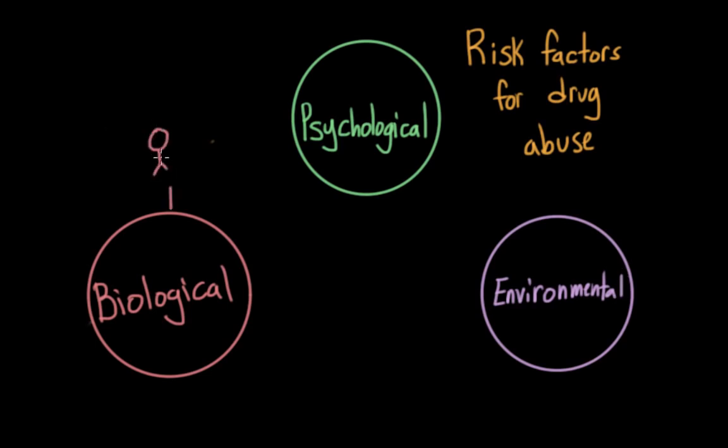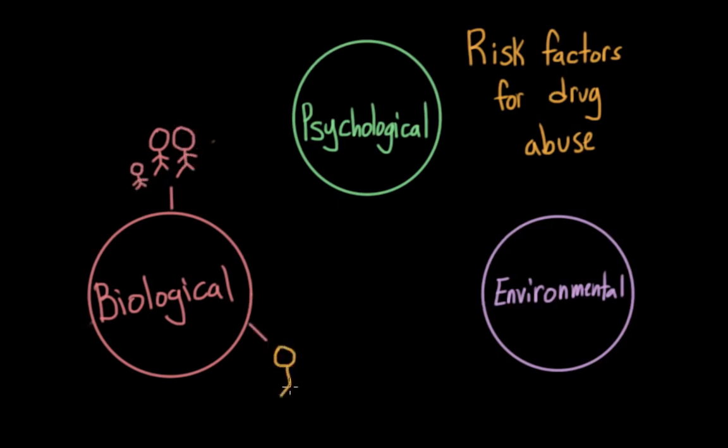We know that if a child has a parent who abuses substances, they are more likely to abuse them as well. And this in combination with the fact that identical twins have more similar rates of addiction than fraternal twins seems to imply that there could be a genetic component to addiction. This is also supported by the fact that adopted children tend to resemble their biological parents more than their adopted parents in terms of addiction rates.